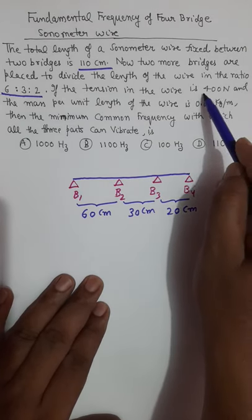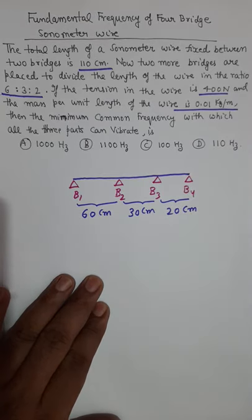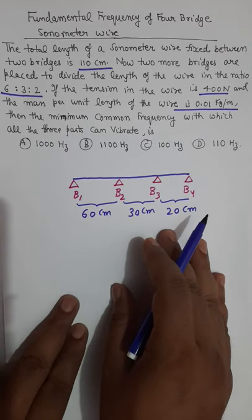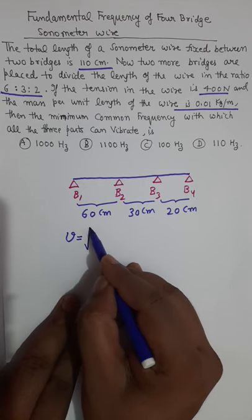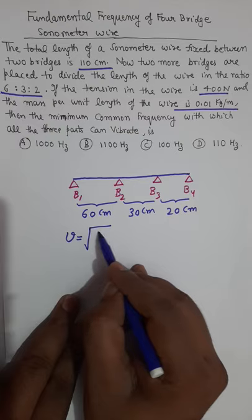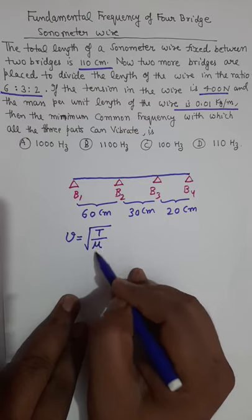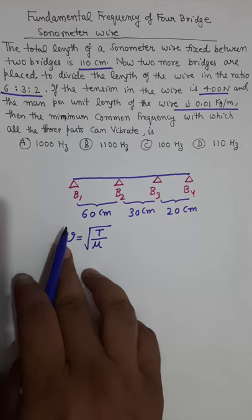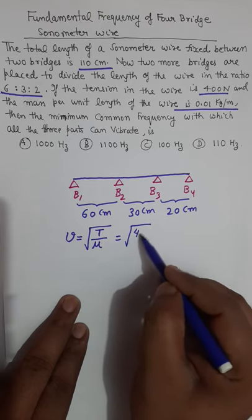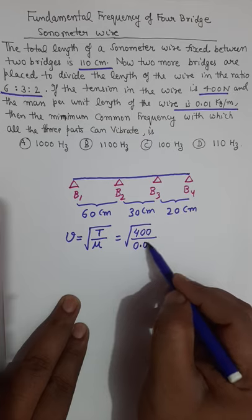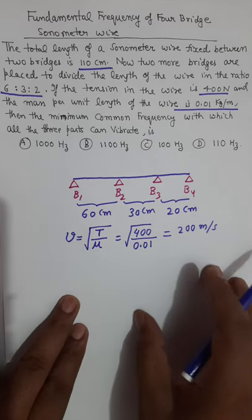Apart from this, the tension force in the string is given, and the linear mass density — mass per unit length — is also given. Tension force and linear mass per unit length will help us find the speed of the wave. The speed of a wave in the string is calculated by the square root of tension force divided by mass per unit length. Putting tension force = 400 and mass per unit length = 0.01 kg/m, the wave speed is 200 m/s.